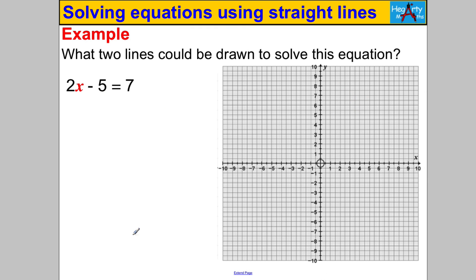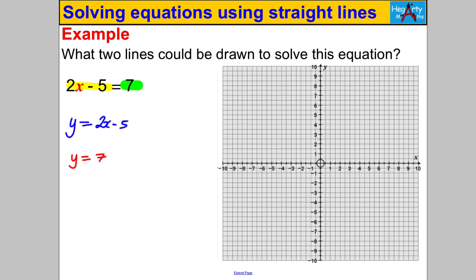Now I'm making it slightly harder for the purpose of this video. You'll usually be given the lines drawn for you, but I'll have us draw the lines too for extra practice. To solve 2x - 5 = 7 graphically, draw the line y = 2x - 5 on one side and y = 7 on the other. Where they intersect is the solution.